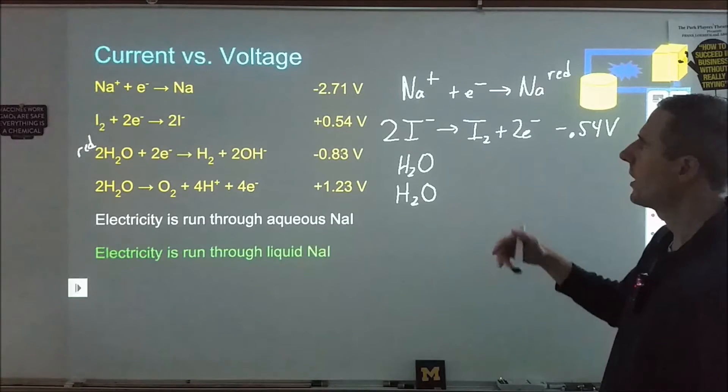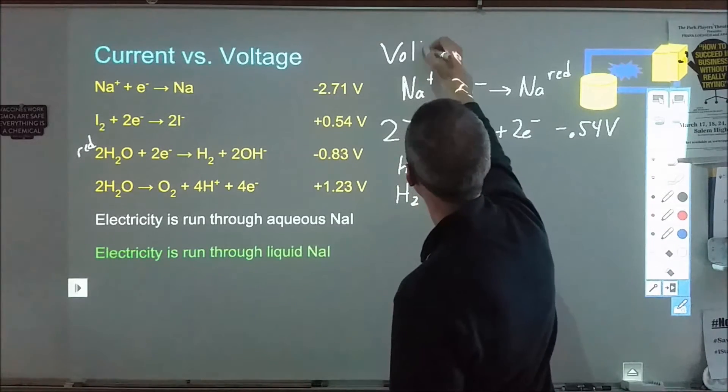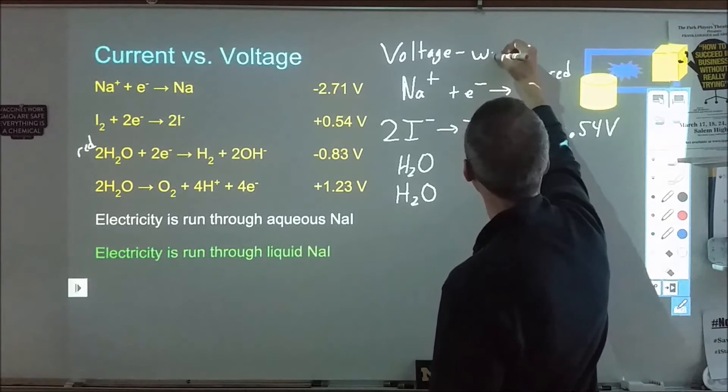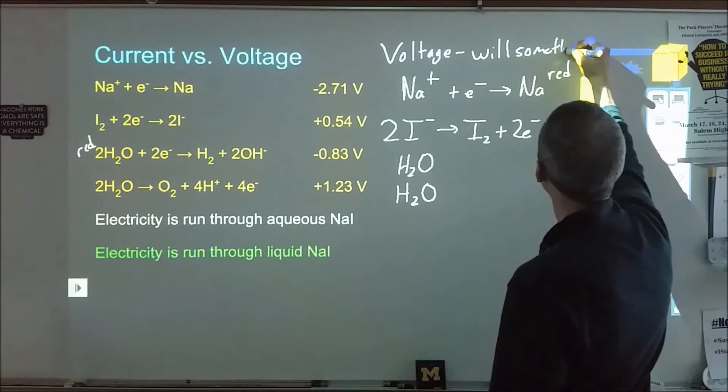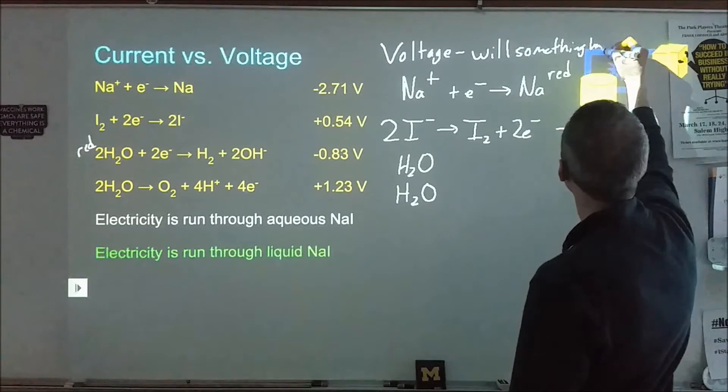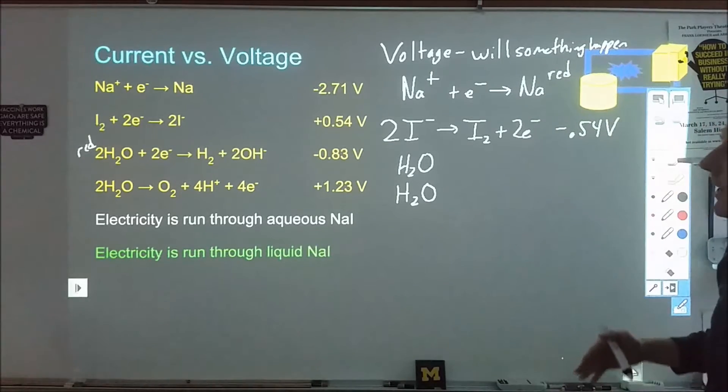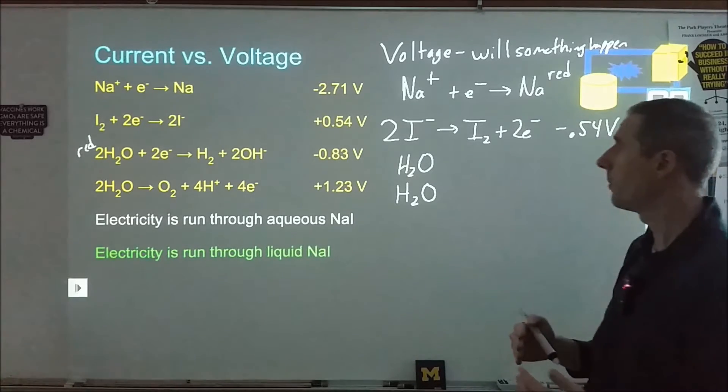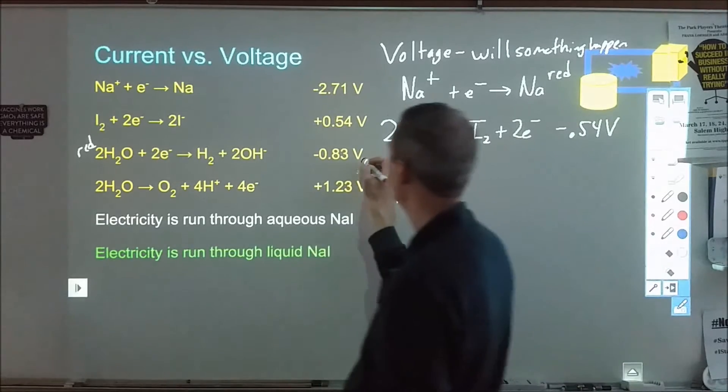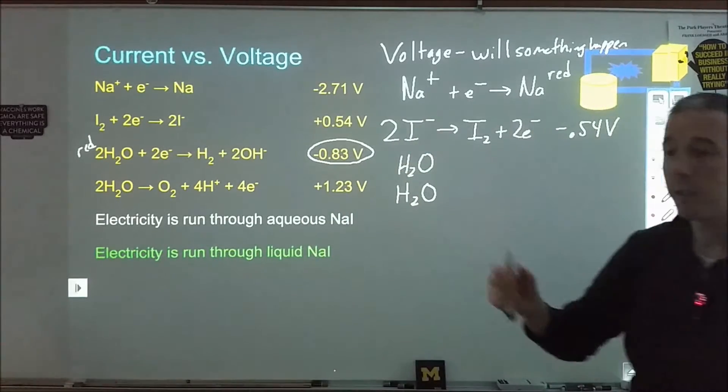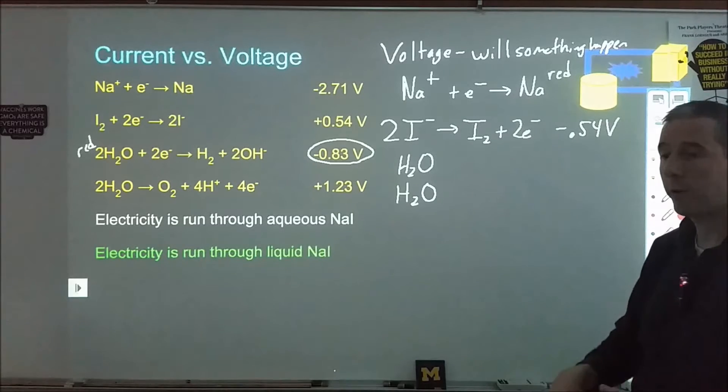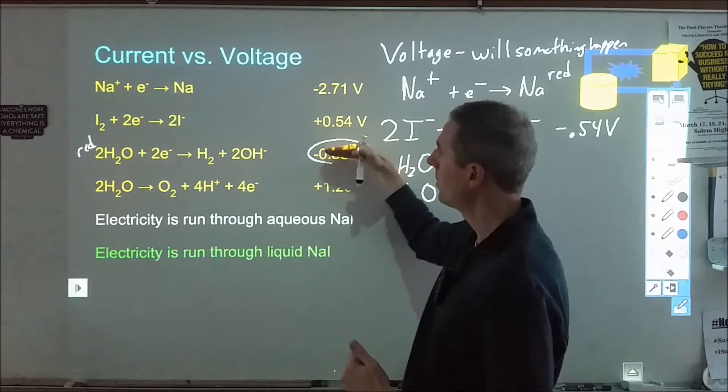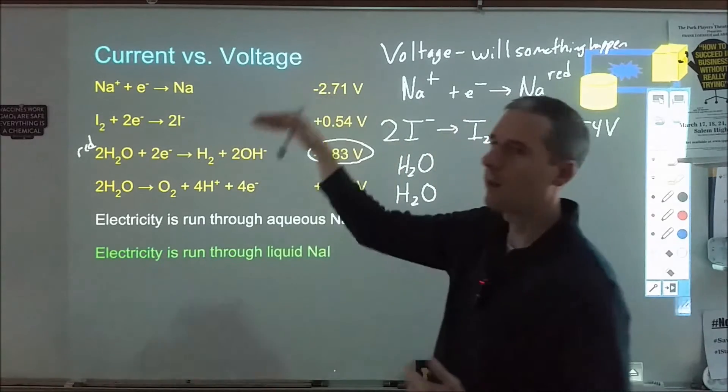The voltage in this case gives us information about will something happen. In this case, we're looking at which of these two things will happen: will I get the sodium to form or will I get the hydrogen to form? I'll get the hydrogen to form. Because this is a preferential voltage, we can tell the likelihood of that ability for the external battery to push electrons onto it. If you have an external battery, even if it's hooked up to 9 volts, you're still going to push those electrons onto the water instead of the sodium ions.